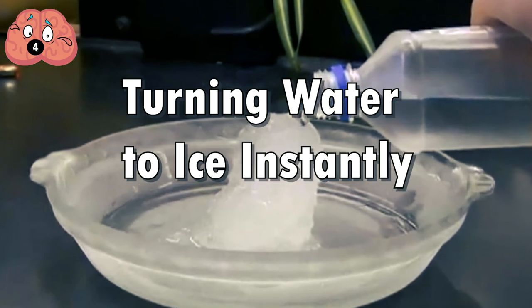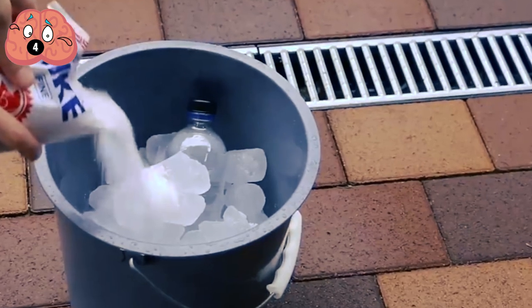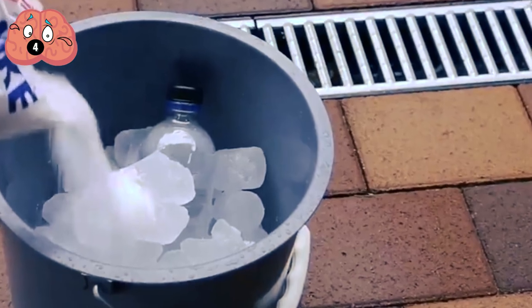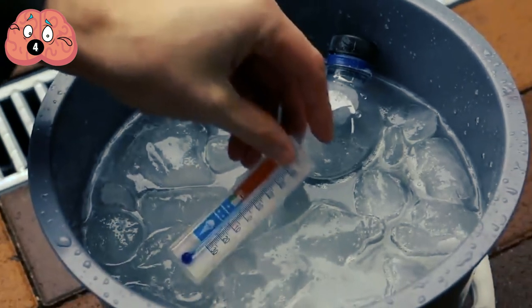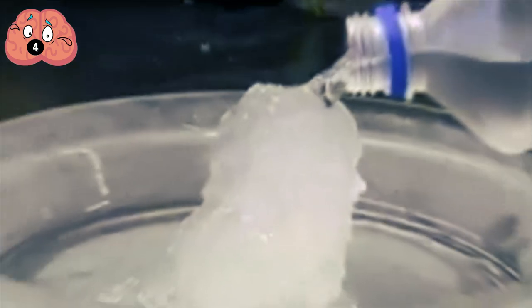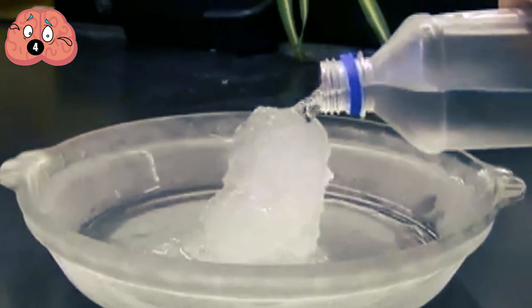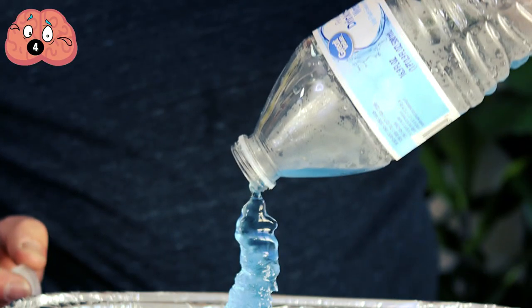Number 4. Turning Water to Ice Instantly. Here's what you need to do. Place a bottle of purified, deionized water into a bucket and put 3 kilograms of ice around the bottle, add 1.5 kilograms of salt over the ice, and fill it with water up until the bottle's lid. Check the temperature of the water using a thermometer, and once it reaches negative 8 degrees Celsius, carefully take the bottle out of the bucket. Prepare a clear mixing bowl with ice cubes in the bottom. Gently open the cap of the bottle. Pour the water into the ice, and the water freezes instantly.